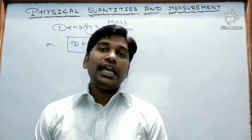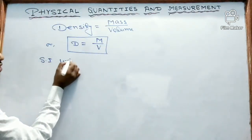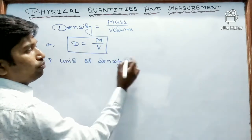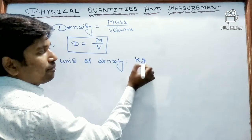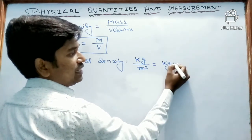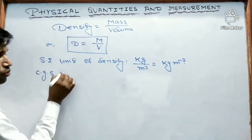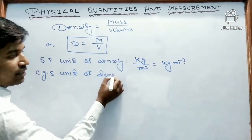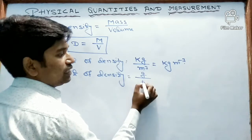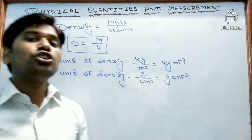Now let us see the SI unit and CGS unit of density. For the SI unit, since density equals mass by volume, mass is measured in kilograms and volume is measured in meter cube. So the SI unit of density is kg per meter cube. For the CGS unit, mass is measured in grams and volume is measured in centimeter cube, so the CGS unit of density is gram per centimeter cube.